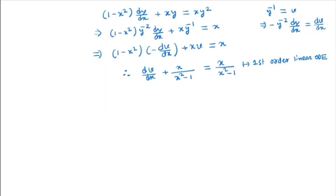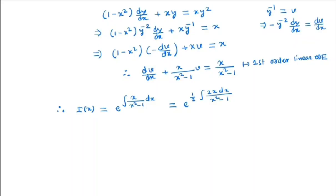I have already made a video on that — you can check it, I will give the link in the description box. Basically, first we find the integrating factor, which will be e raised to the integral of the coefficient of v. Here the coefficient of v is x/(x² - 1). So this will be e^(½ · ∫2x dx/(x² - 1)). Notice that the derivative of (x² - 1) is 2x, so it will be e^(½ · ln|x² - 1|), which is nothing but √(x² - 1).